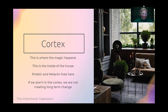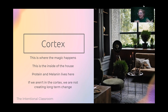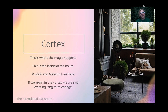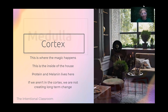The cortex is where the magic happens — the inside. This is where your protein and your melanin live. This is where it really exists and thrives. If we are not in the cortex, we are not creating long-term change. Temporary hair color or mascara basically stains the cuticle layer of the hair — we don't have to get into the cortex. But notice I said temporary — it doesn't last forever. If we want to make permanent change, we have to get into that cortex of the hair.